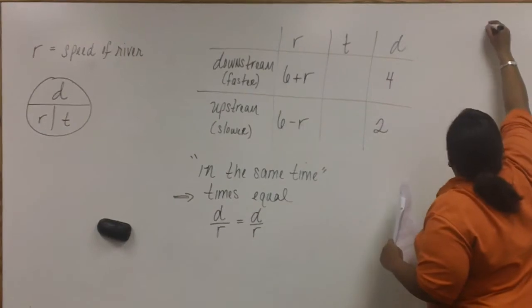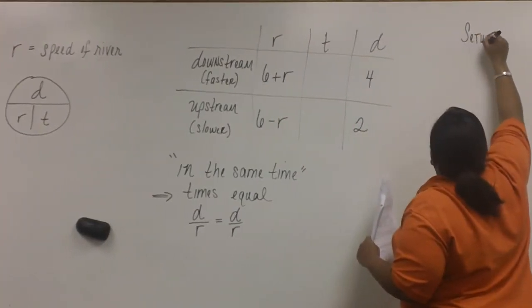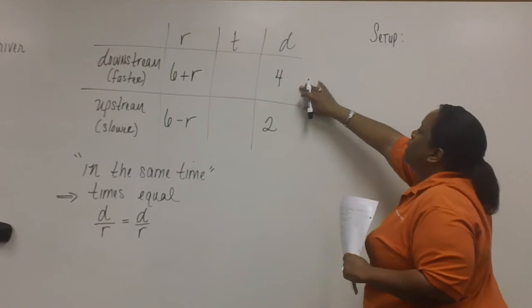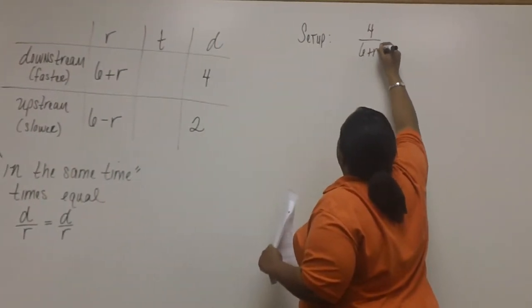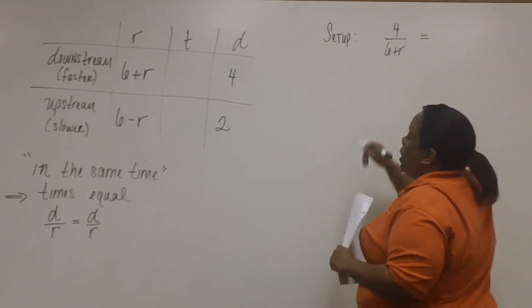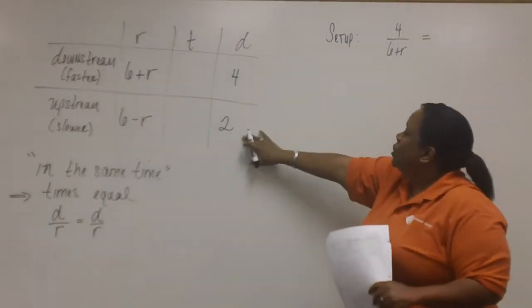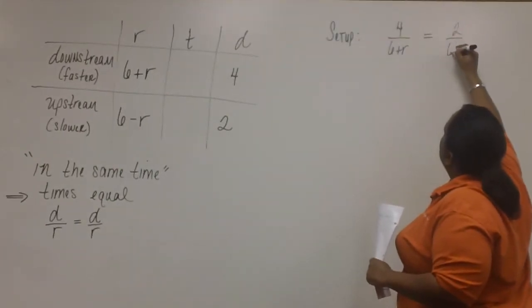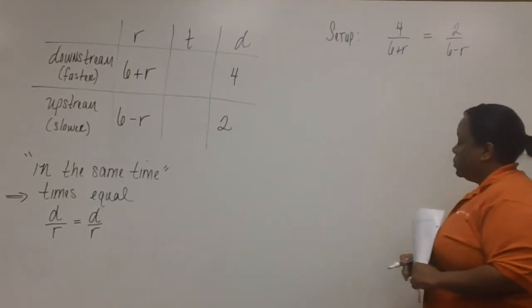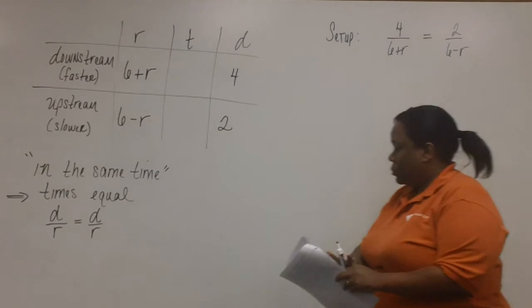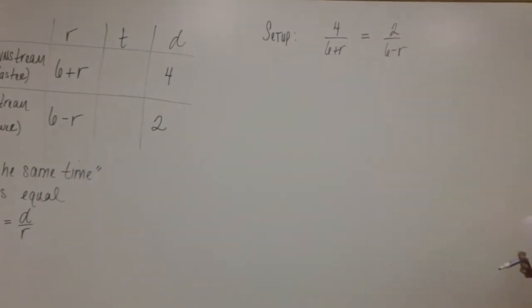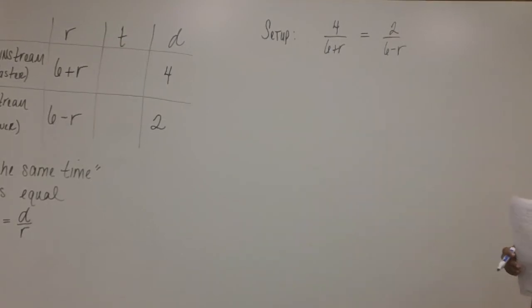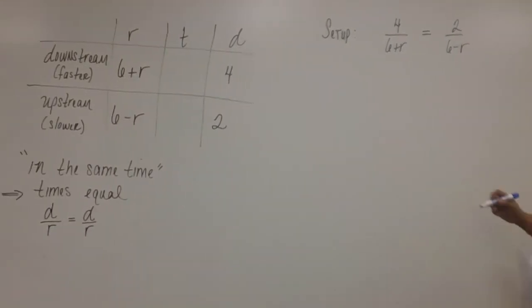So, here's the setup. For downstream, D over R is four over six plus R equal to two over six minus R. Now, we'll multiply both sides by the LCD of six plus R times six minus R.